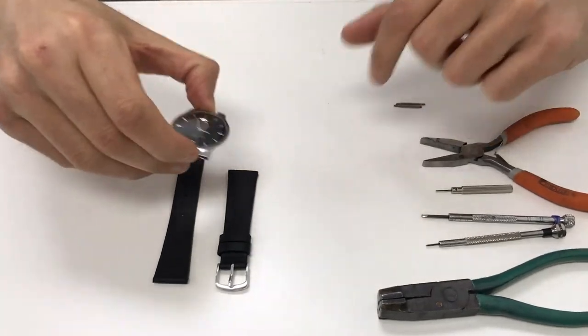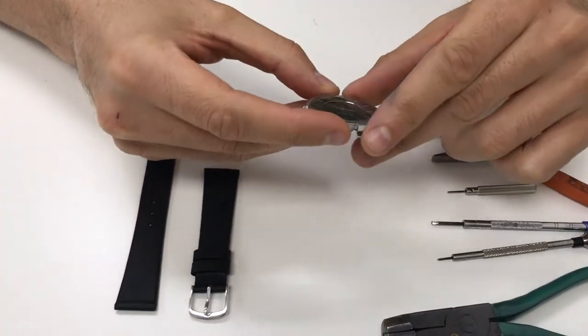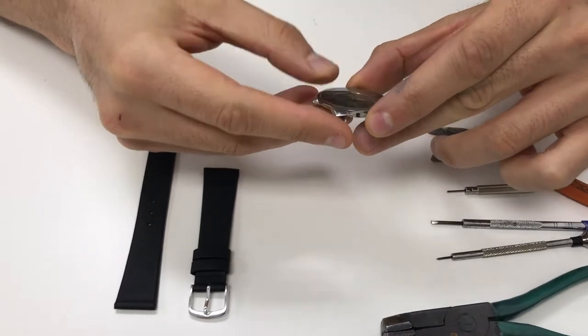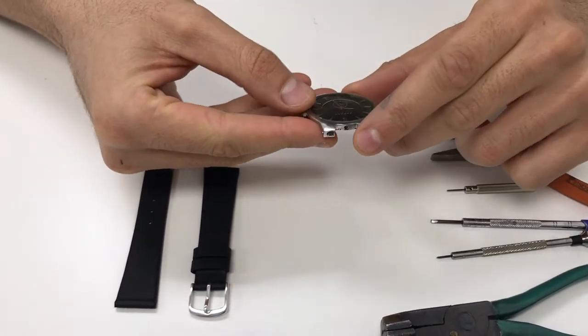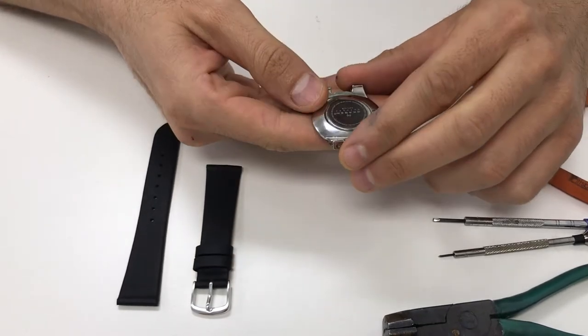Today we're going to customize a black leather strap for this Skagen watch. This Skagen was probably one of their most popular models for a very long time. However, they discontinued this watch and now a lot of people are needing watch straps for this and they are no longer available.